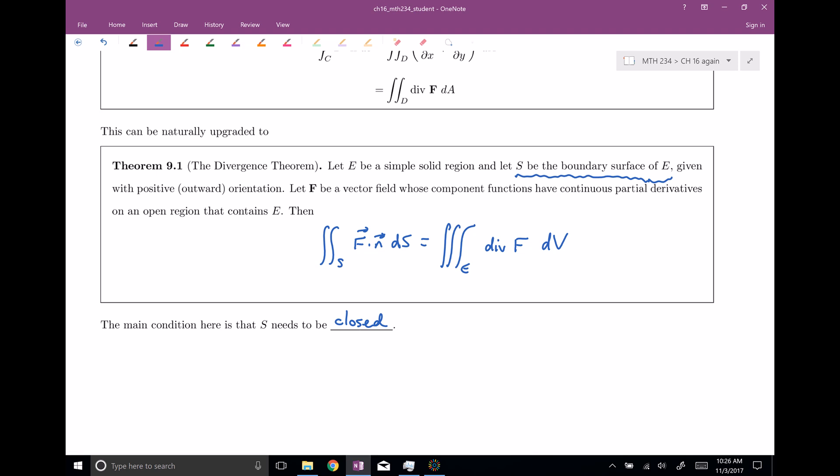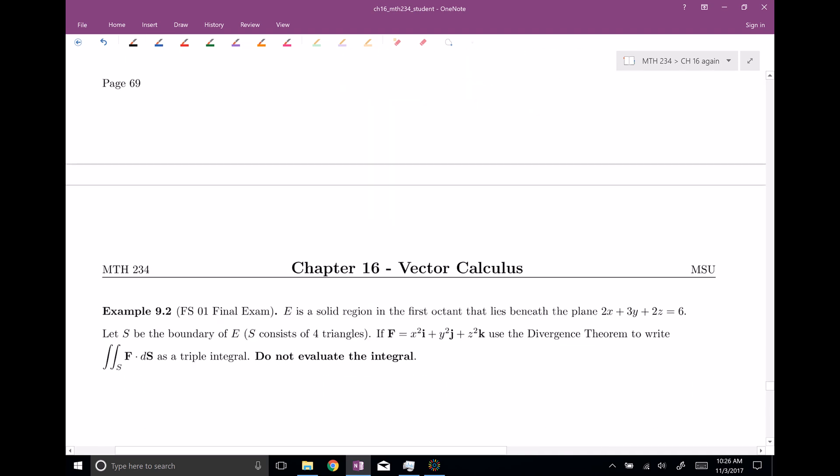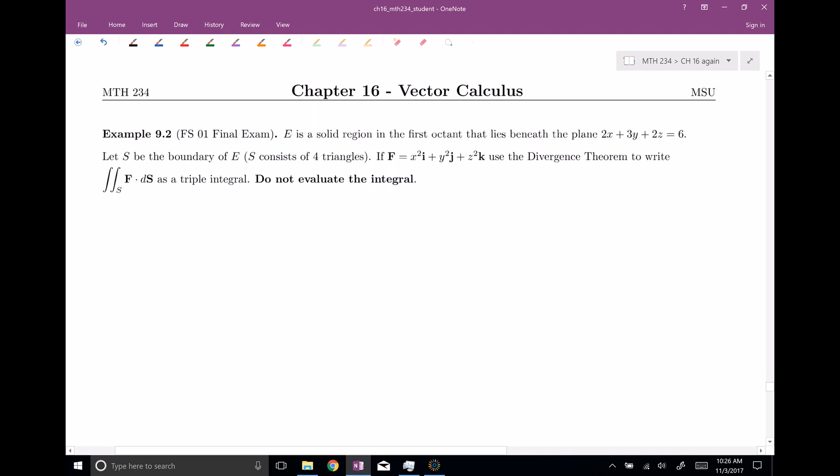We should have a positive or outward orientation. This N here needs to have an orientation, should we choose the inward or the outward one, we're going to choose outward. And then F should be a vector field that's relatively nice, which means that its component functions should have continuous partial derivatives on an open region that contains E, because the divergence here means that we're going to need to calculate out the derivatives of each one of these components. The main condition here is really that S needs to be closed. It needs to be the boundary surface of some three-dimensional region E. So that is the statement of the divergence theorem, and I have a problem for us to practice on. This was a final exam problem back in 2001. Let's go ahead and set this up.